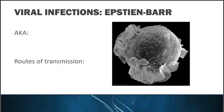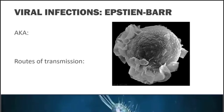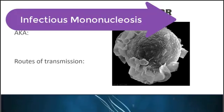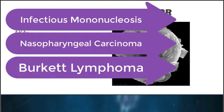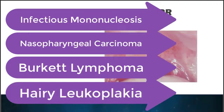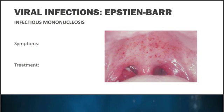The Epstein-Barr virus is also known as the kissing disease because it's most often transmitted through saliva, but it can also be transmitted sexually, via blood transfusion, during birth or breastfeeding, or even through organ transplantation. This virus is associated with four conditions in the oral region: infectious mononucleosis, nasopharyngeal carcinoma, Burkitt lymphoma, and hairy leukoplakia. We'll talk about hairy leukoplakia when we cover HIV and AIDS, but the focus here is infectious mononucleosis as the most common disease caused by Epstein-Barr.